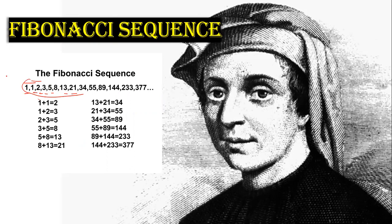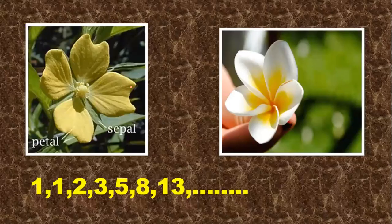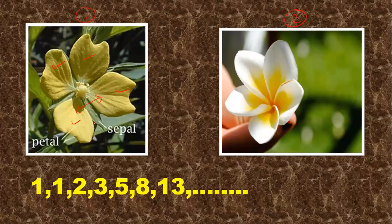In nature there are two types of flowers. The first type has petals, and between two petals there is a leaf-like structure of green color called a sepal. The second type of flower has no sepal — only petals.